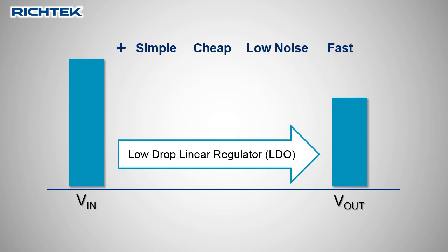However, because LDOs drop the input voltage to the lower output voltage by dissipating the excess input voltage, LDO applications with large voltage differences between the input and output have relatively low efficiency and their power dissipation can lead to thermal limitations.